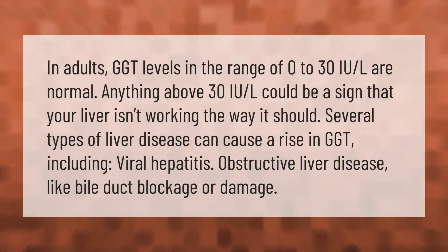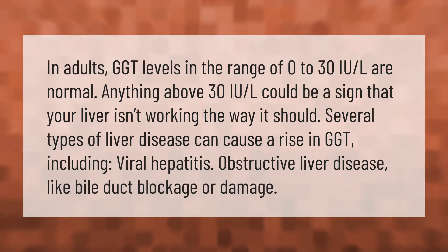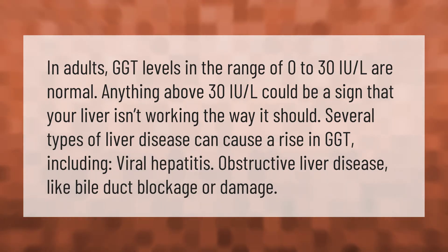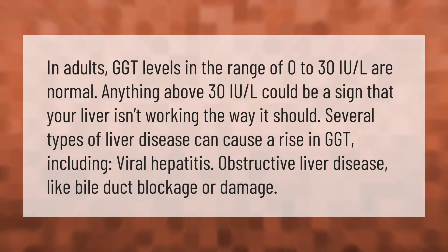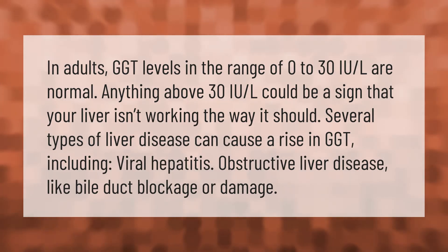In adults, GGT levels in the range of 0 to 30 IU/L are normal. Anything above 30 IU/L could be a sign that your liver isn't working the way it should.